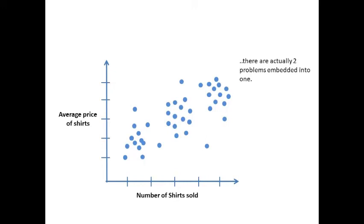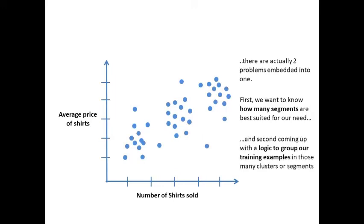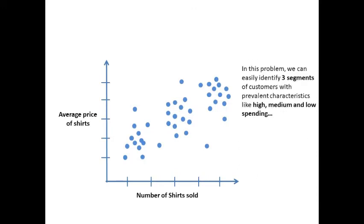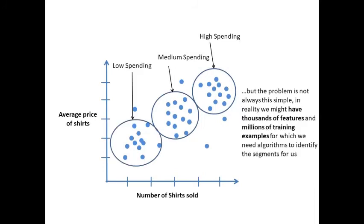There are actually two problems embedded into one. First, we want to know how many segments are best suited for our need. And second, coming up with the logic to group our training examples in those many clusters or segments. In this problem, we can easily identify three segments of customers with prevalent characteristics like high, medium, and low spending.